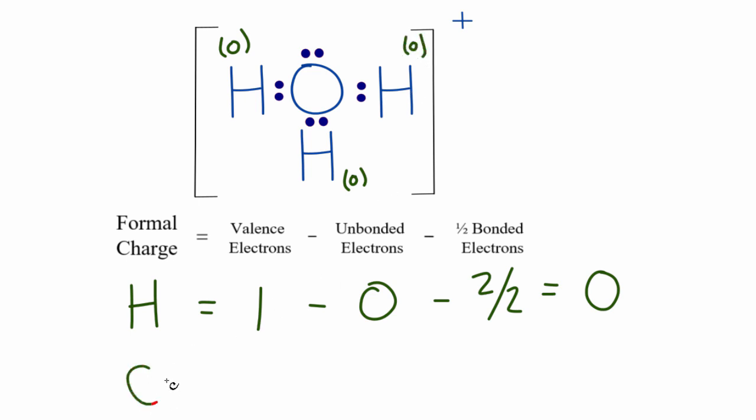For the oxygen, oxygen is in group 16, sometimes called 6A. It has six valence electrons. Unbonded, it has these two right up here, these lone pair electrons. And then bonded,